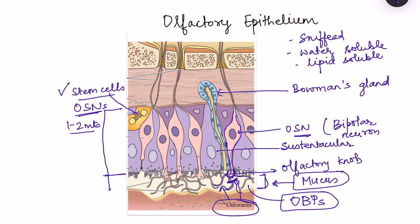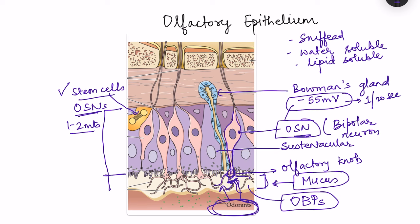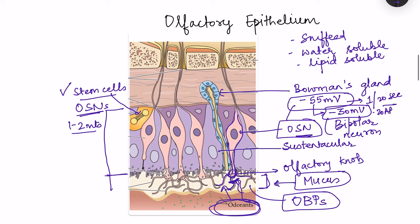The resting membrane potential of these olfactory sensory neurons is minus 55 millivolts. At rest, there are already some slow action potentials — perhaps one every 20 seconds — but it is not completely silent. When odorants bind to the receptor and sensory transduction takes place, the membrane potential changes. Once it reaches the threshold of minus 30 millivolts, there is generation of many action potentials, approximately 20 per second.